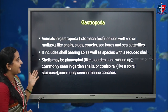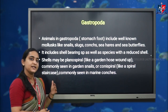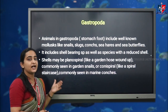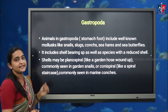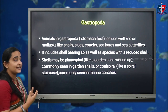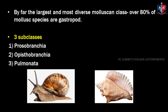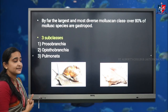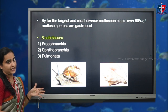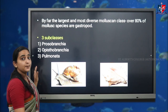Gastropoda includes shell-bearing species as well as species with a reduced shell. In most cases the shells may be either in planospiral or conic spiral shape. By far, Gastropoda is the largest and most diverse molluscan class, with over 80% of molluscan species belonging to Gastropoda.